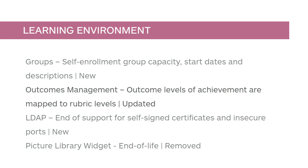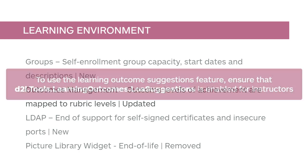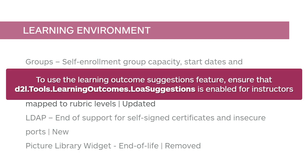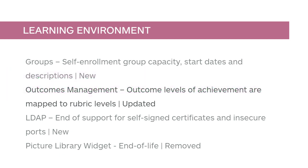Levels of Achievement are now automatically mapped to Rubric Levels. This functionality is automatically enabled for Learning Outcome users. To use the Learning Outcome Suggestions feature, ensure that D2L Tools Learning Outcomes LOA Suggestions is enabled for instructors. For more details on mapping configurations, review the Release Notes.